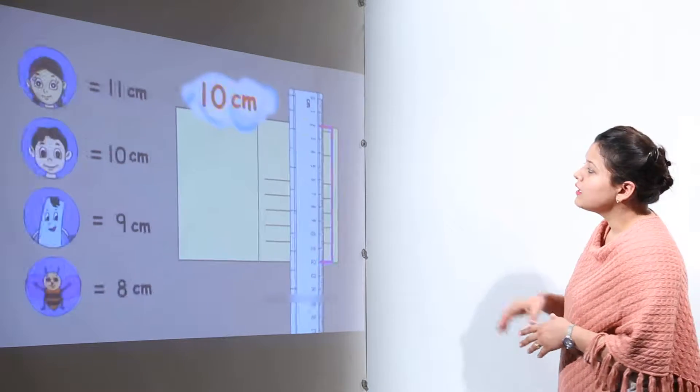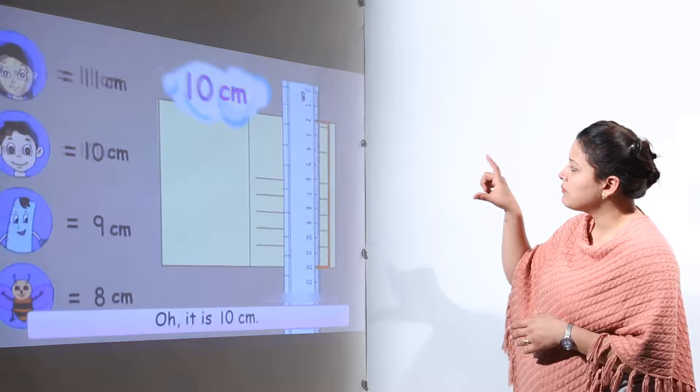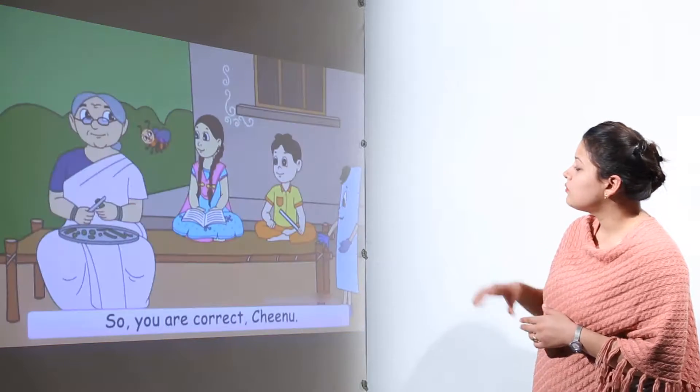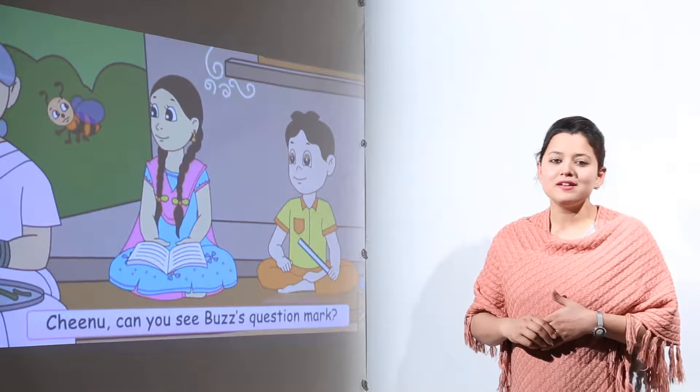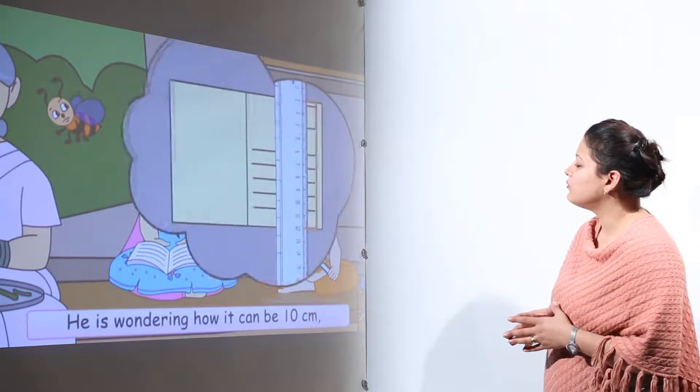Let us measure and check. Now when we measured this, when grandma placed the scale over this, it was exactly 10 centimeters. So Chinoo was absolutely correct in estimating the width of this envelope.